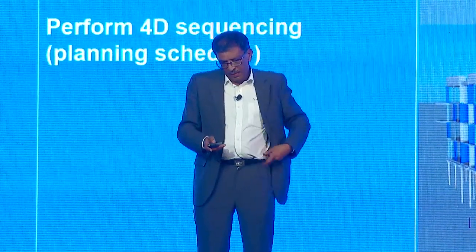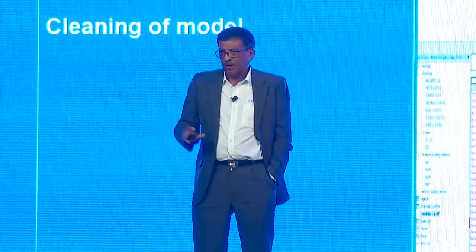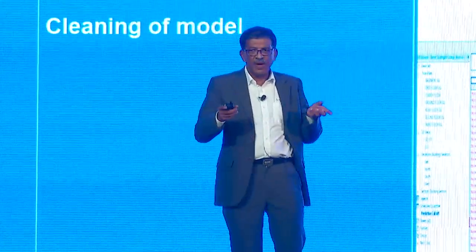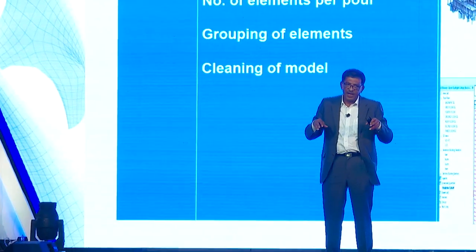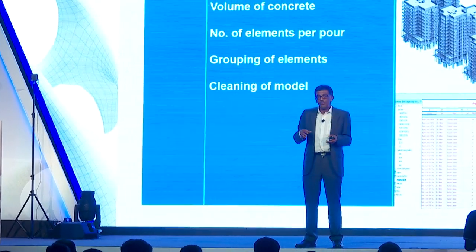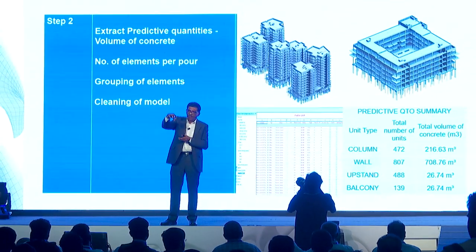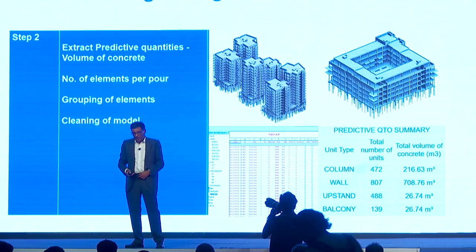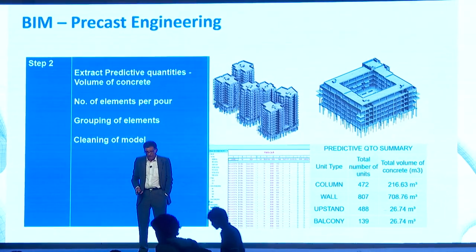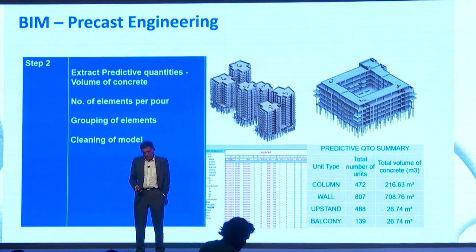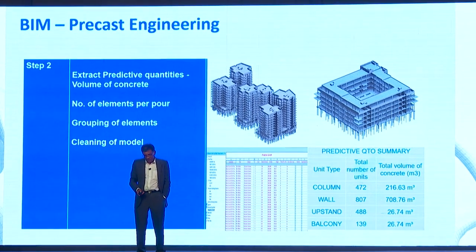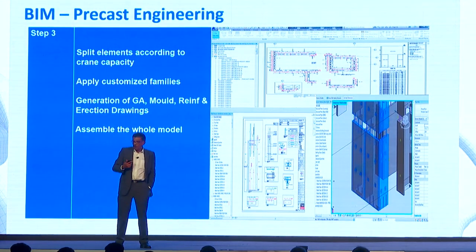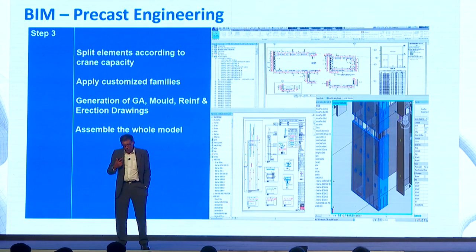Step two: columns, walls, staircases, and balconies are roughly split based on the crane capacity. That is where the engineering comes in. The engineer preparing these elements has to find out the lifting capacity of the crane, then split the model to suit that lifting capacity, clean the model, pass the model, and add all the reinforcement details into the elements. Then generate all the GA drawings, columns, and wall upstand drawings, and generate all unit drawings for assemblies.